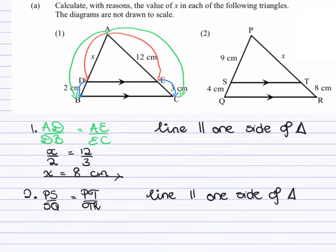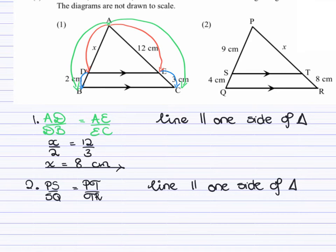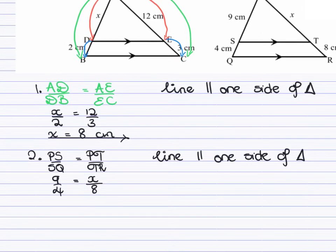Now, let us go ahead and substitute in the values that we have. We know that PS is 9 centimeters. SQ is 4 centimeters. This would be equal to X, which is PT, over TR, which is 8 centimeters. Again, you want to make X the subject of the formula. Once you do that, you see that your X is equal to 18 centimeters.